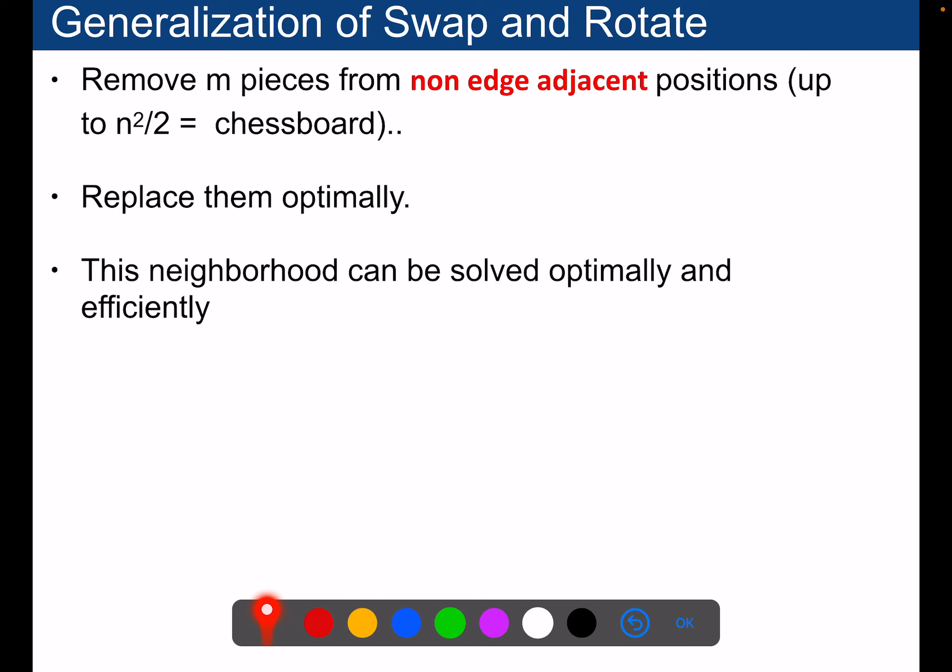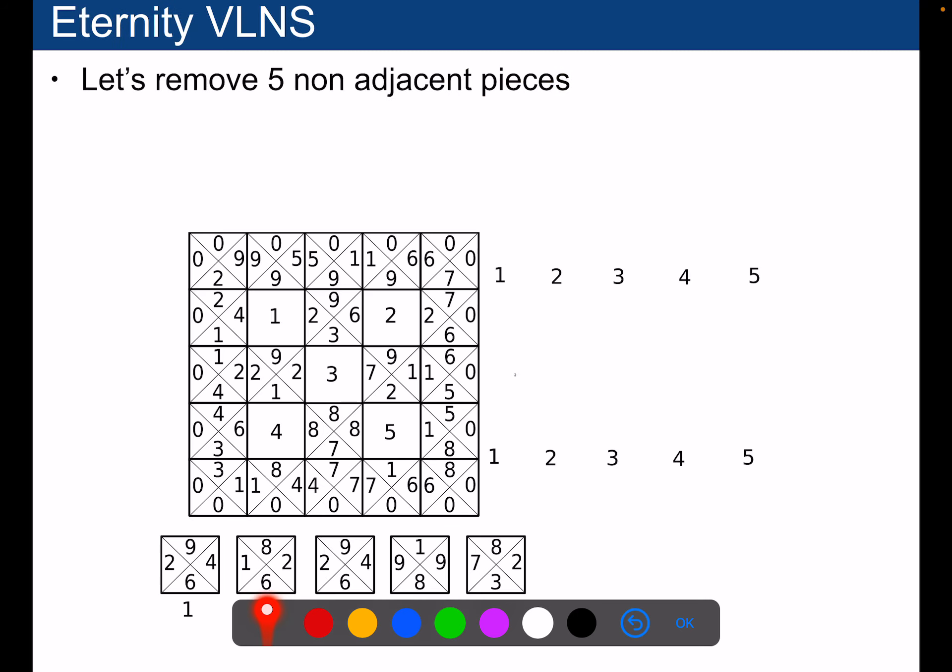The idea is the following: you will remove the ones that you used to have here, you remove them because they are not matching, I put them there. And I will replace them optimally to minimize the number of violations. For that I create what I call a bipartite graph from the positions.